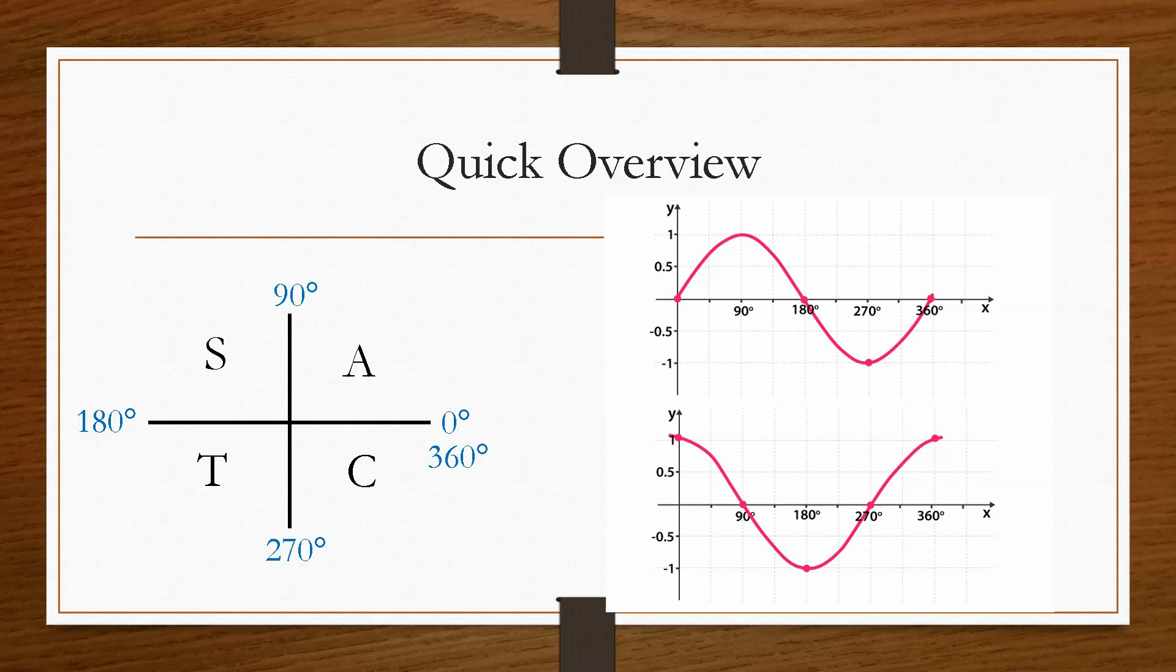So you can see here that the highlighted angles are 0, 90, 180, 270, 360, so they're the most important. So what I'm going to do is on the graphs, I'm going to put lines through each of these key angles. So we're going to split the graph up into four different sections.